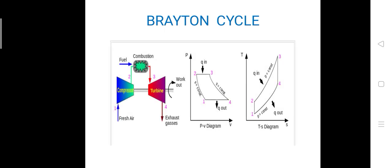Next, the Brayton cycle. This gas turbine power plant follows the Brayton cycle. The Brayton cycle consists of two constant pressure processes and two isentropic processes. The gas turbine power plant consists of three major components: compressor, combustor, and turbine.